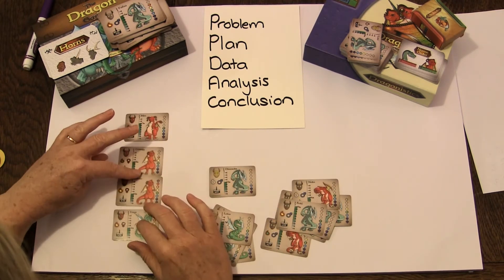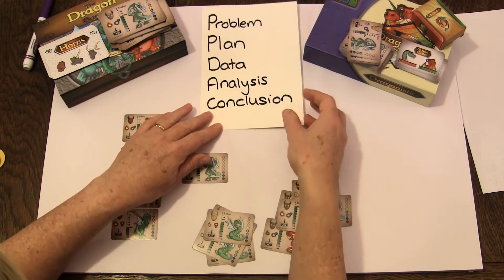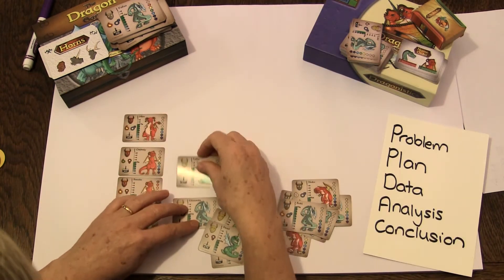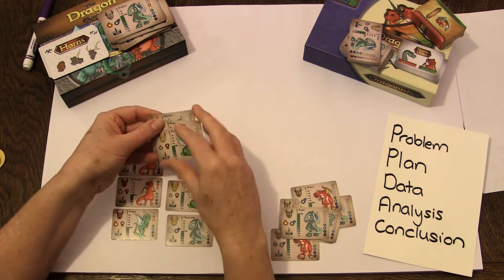So we're going one, two, three, four are dangerous and one, two, three. This is the analysis part.